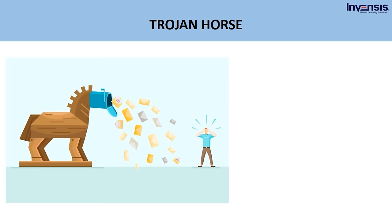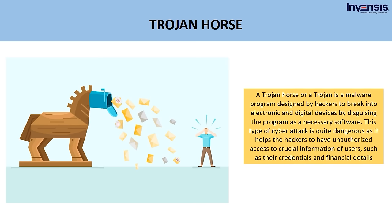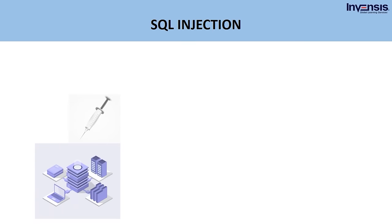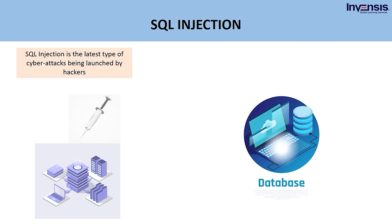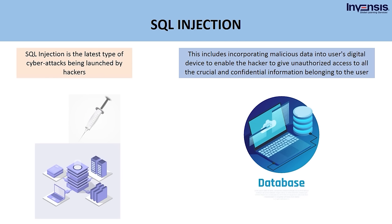The next type is the Trojan Horse. A Trojan Horse is a malware program designed by hackers to break into electronic and digital devices by disguising the program as necessary software. This type of attack is quite dangerous as it allows hackers to have unauthorized access to crucial information such as credentials and financial details. SQL Injection is the latest type of cyber attack, incorporating malicious data into the user's digital device to enable the hacker to access all crucial and confidential information.